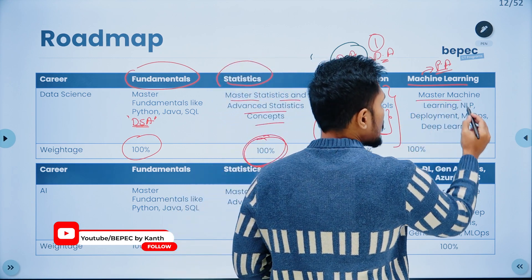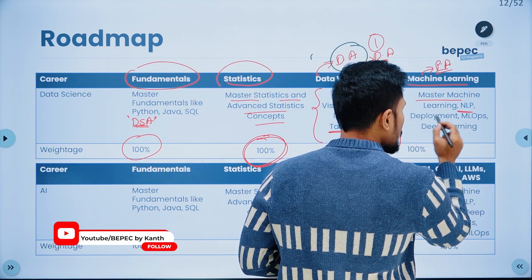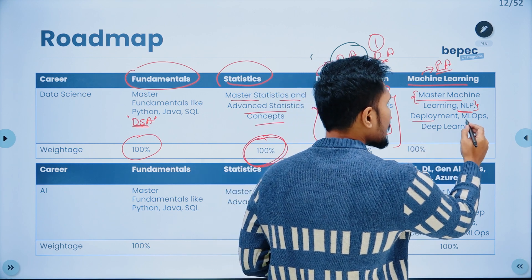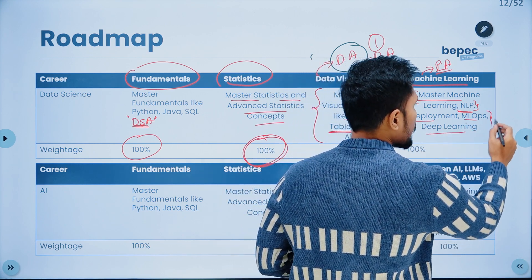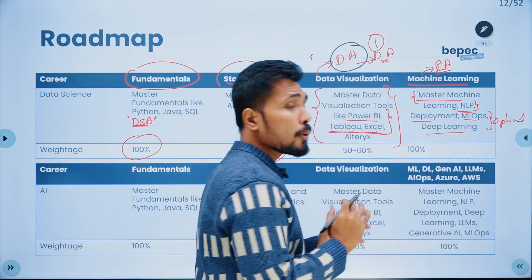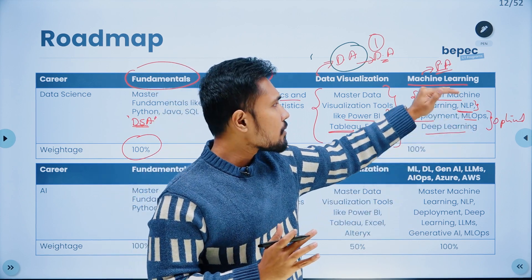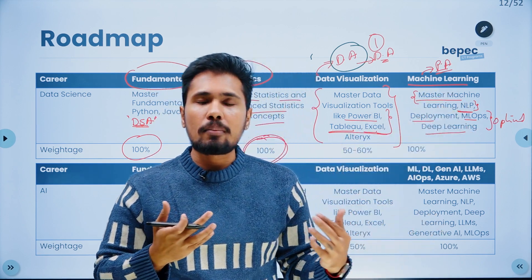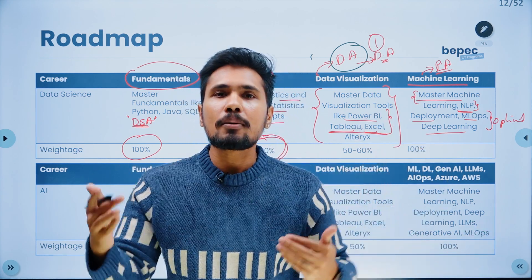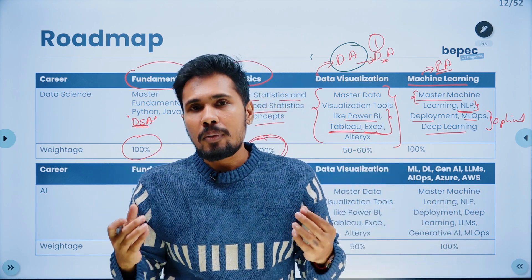You need to master machine learning and natural language processing — that would be sufficient for a data scientist. Deployment, MLOps, and deep learning are optional and not mandatory for data scientists, though they are mandatory for AI learners. After developing a machine learning model, you can demonstrate and communicate that model with clients in various ways — deployment is not the only way. You can showcase it through real-time projects without needing full software engineering deployment knowledge.